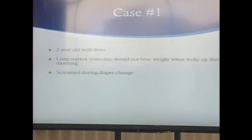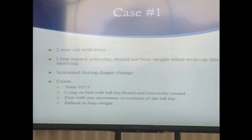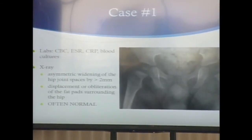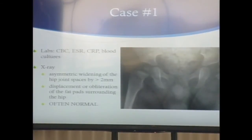Three cases to go over. Two-year-old with fever, limp started yesterday, but woke up this morning and would not walk at all. Tried to change their overnight diaper and they were screaming. On exam, temperature 102, lying in bed with the left hip flexed and externally rotated. They don't tolerate any movement of that left hip and won't bear weight at all. We want to get labs — CBC, ESR, CRP, and blood cultures — and start with AP and frog pelvis x-rays.